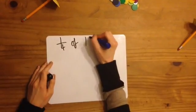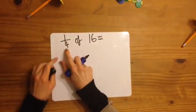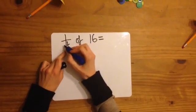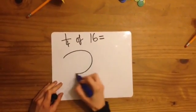For a quarter of 16, I'm going to split my number of counters into four groups because that's my denominator. So 1, 2, 3, 4.